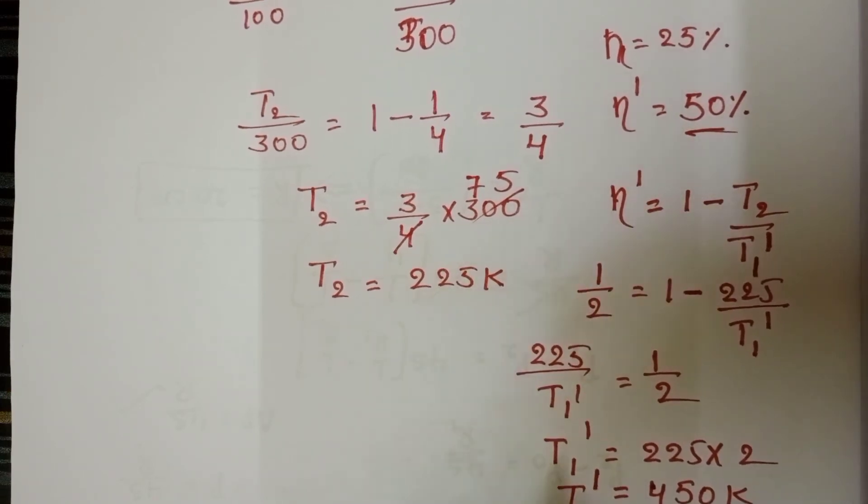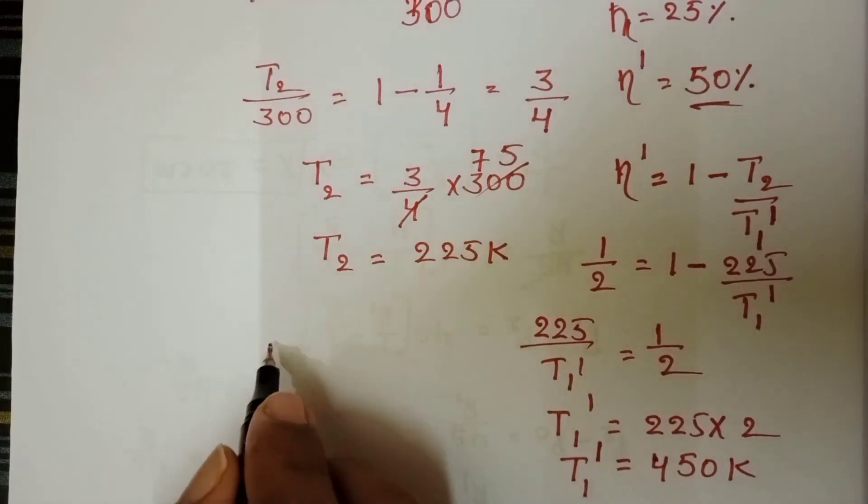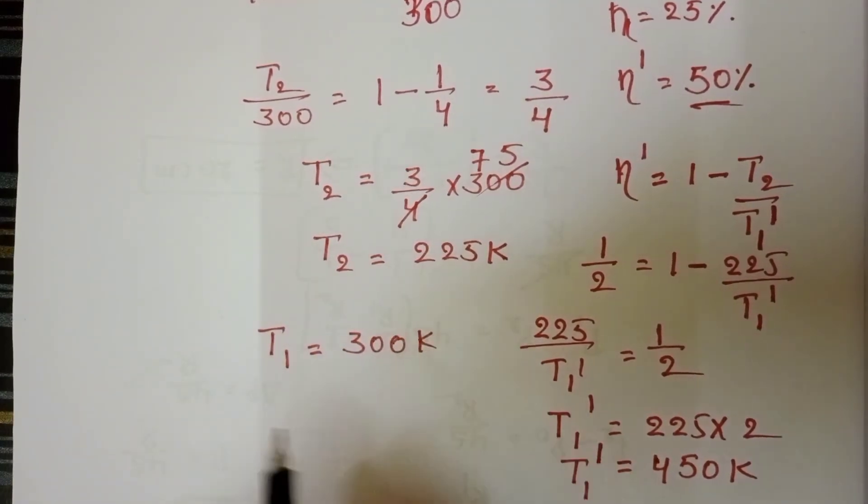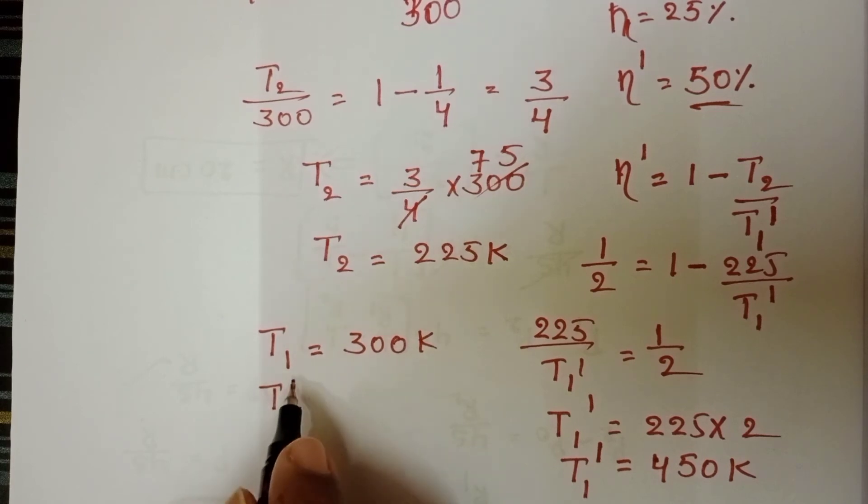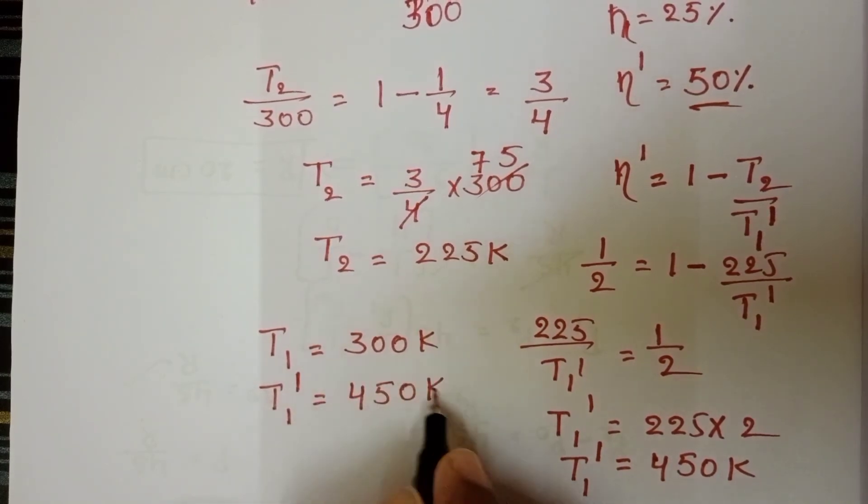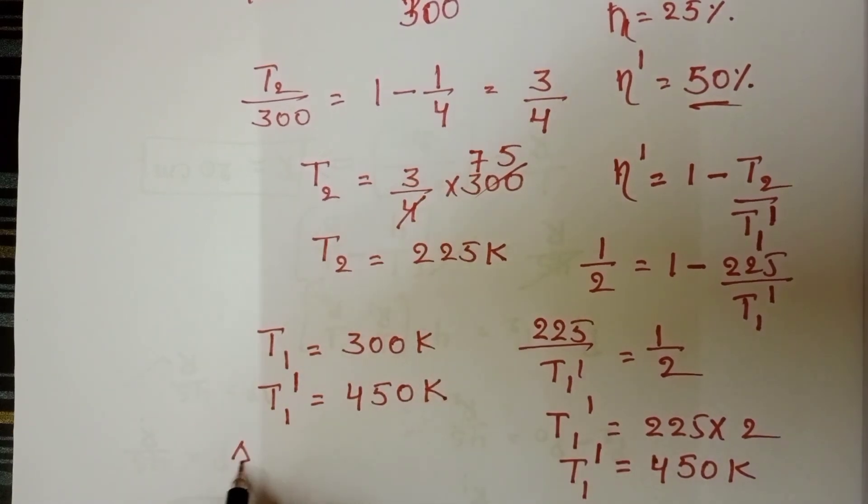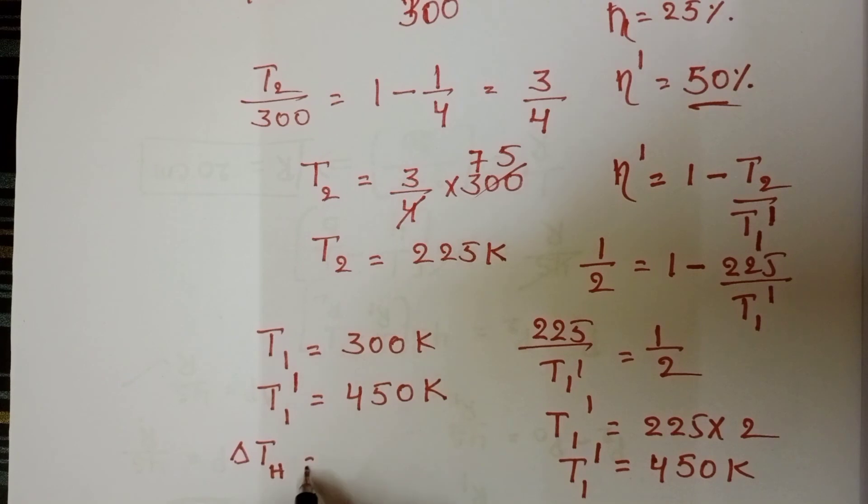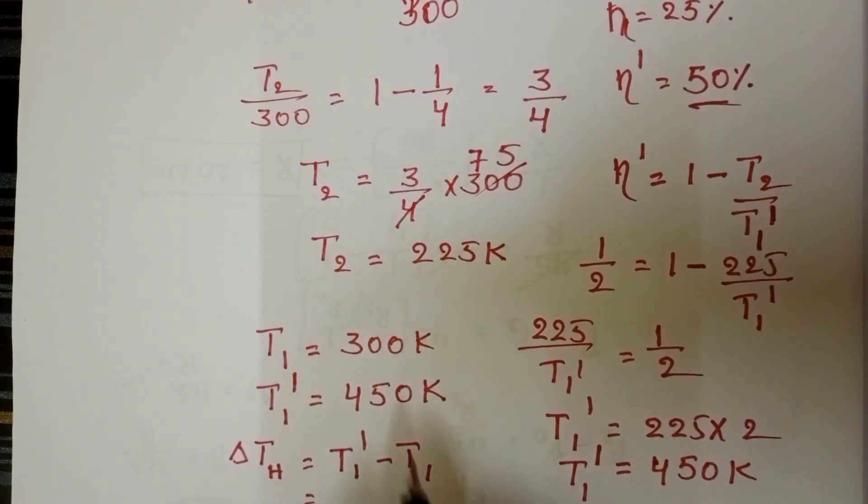Initially temperature of the source is 300 Kelvin. After increasing efficiency, source temperature changes to 450 Kelvin. Then change in source temperature equals T1 dash minus T1, which equals 450 minus 300, equals 150 Kelvin.